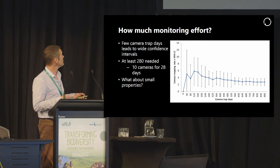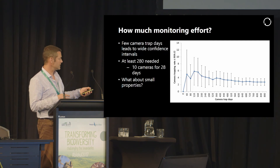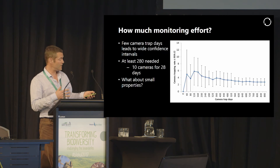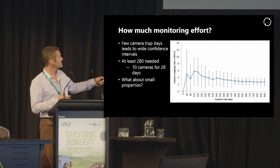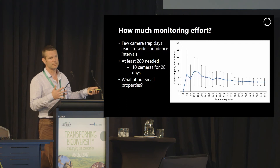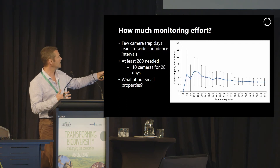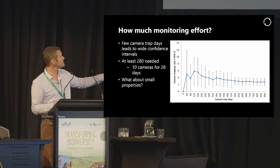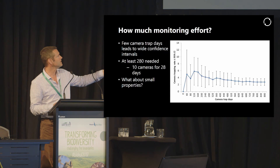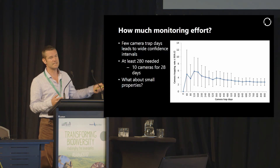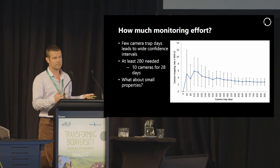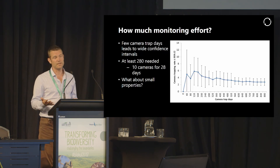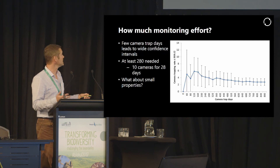This slide shows that the more sampling effort you put out, the more accurate your results are. The very wide error bars show that your result is not very accurate with low effort, whereas towards this end with far larger numbers of cameras out for a longer period you get a much more precise estimate. Based on this we've estimated that you probably need at least 240 to 280 camera trap days in order to get a reliable estimate — so that might be 10 cameras placed out for 28 days, or 20 cameras for 14 days, and so on.